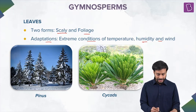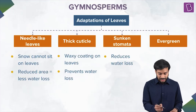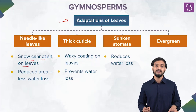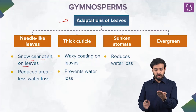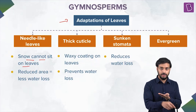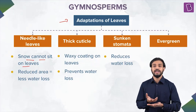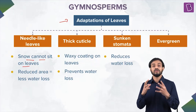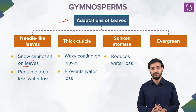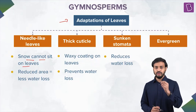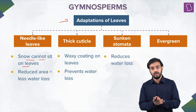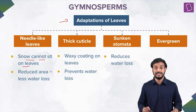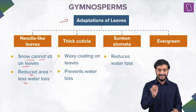Needle-like leaves are an adaptation found in snowy areas so that snow cannot settle on the leaves. If snow were deposited on broad leaves, it would block sunlight and also block the stomata — the important pores in the leaf. The needle shape causes snow to glide off, and it also reduces surface area, minimizing water loss in regions where liquid water is scarce.